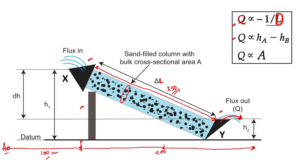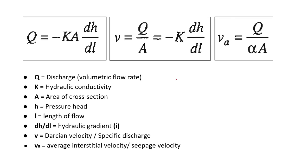This discharge Q is also directly proportional to the area of cross-section A of the cylindrical pipe — so the more the area, the more will be the discharge. When you remove the proportionality sign you get a constant K, which is called the hydraulic conductivity.